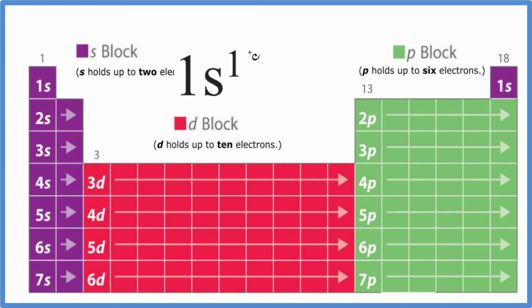So we're looking for the element here on the periodic table that ends in 1s1. And that's right here. This hydrogen right here, 1s1.